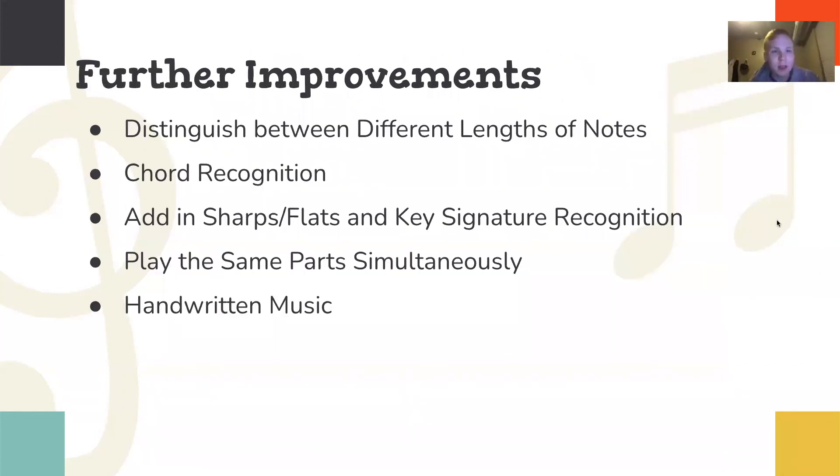Moving on to further improvements we can make. So there's a bunch of things in music that obviously we can't get to with our time. So being able to distinguish a lot more different symbols would be really cool. And then being able to distinguish between an eighth note versus a sixteenth note versus a half note, whole note, that would also be great. And then finally, the end goal would be handwritten music recognition, which is obviously a lot harder because with computers, most notes look pretty similar. But when it's handwritten, we really don't know how it's going to be. So that's our eventual goal, but that's all we could get to for this class. And thank you for listening to our speech.